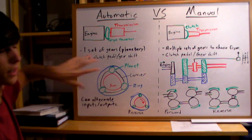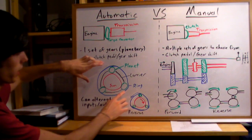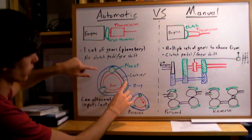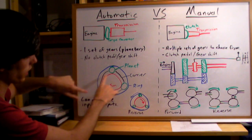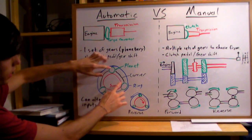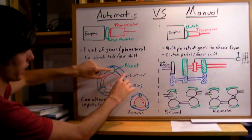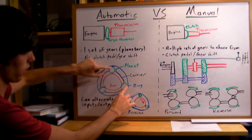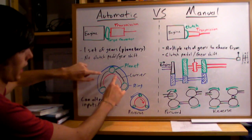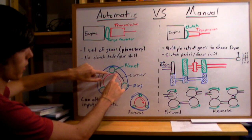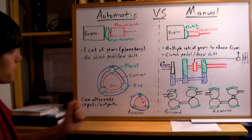Inside an automatic transmission you're going to have planetary gears. For terminology: there's the sun gear in the center, then planet gears which are connected to the sun gear, and around all of it a ring gear. There's also a carrier that holds the planet gears a certain distance from each other.